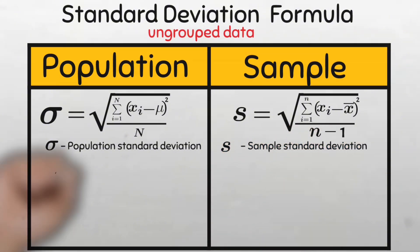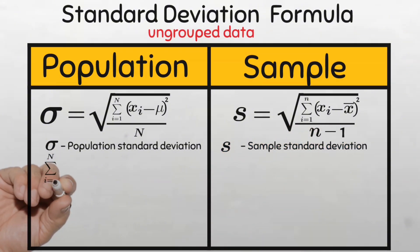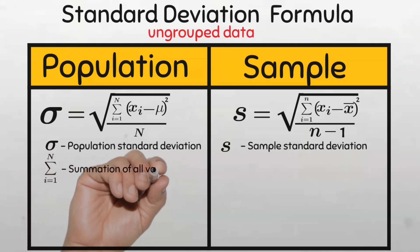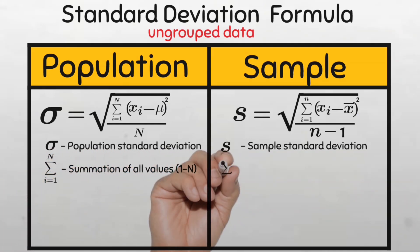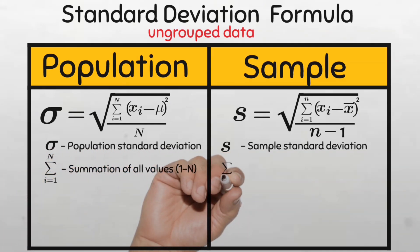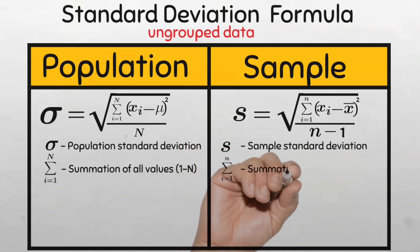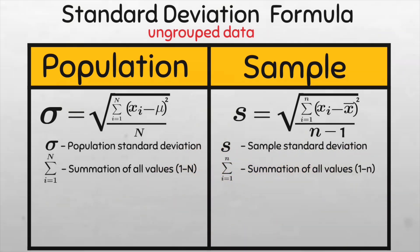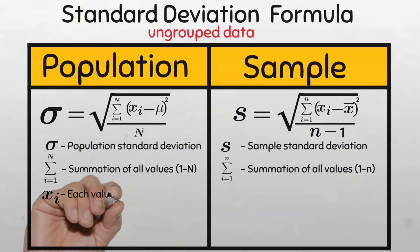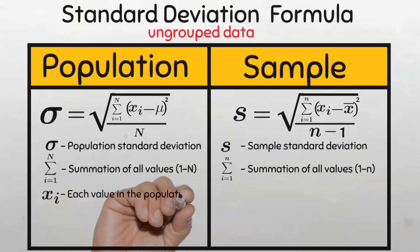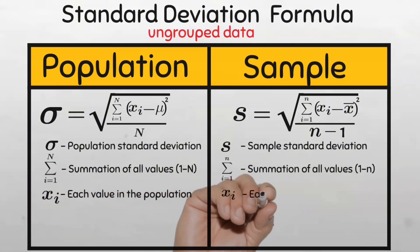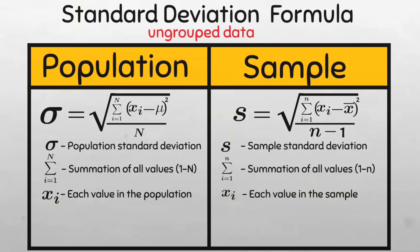Uppercase sigma from i equals 1 to capital N is the summation of all the population values from the first to the last, while uppercase sigma from i equals 1 to lowercase n is the summation of all the values in the sample from the first to the last. x subscript i is the value of each data element in the population, while x subscript i here is the value of each data element in the sample.